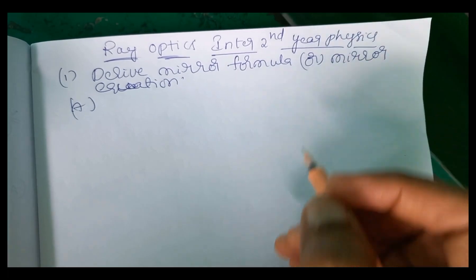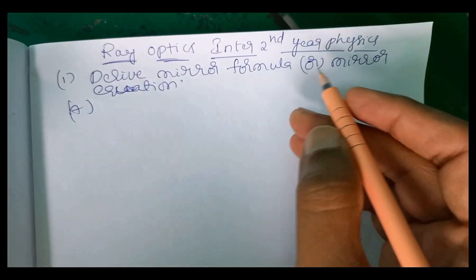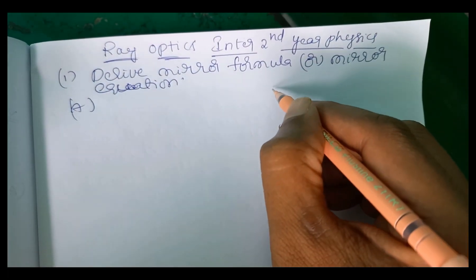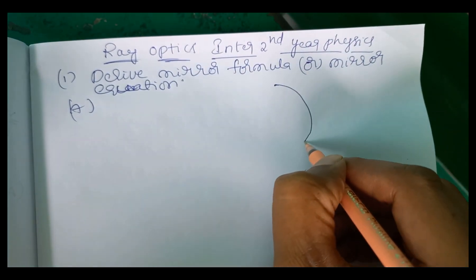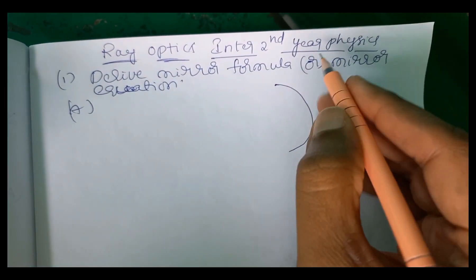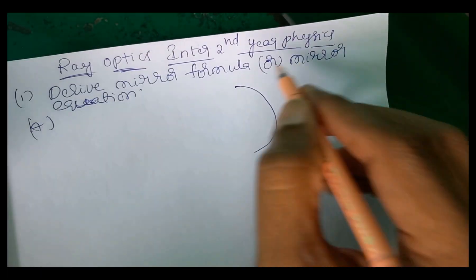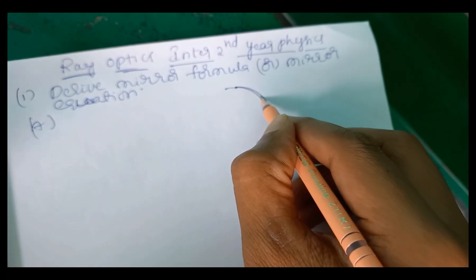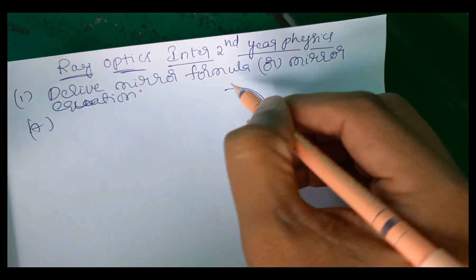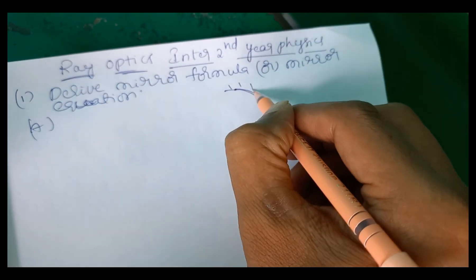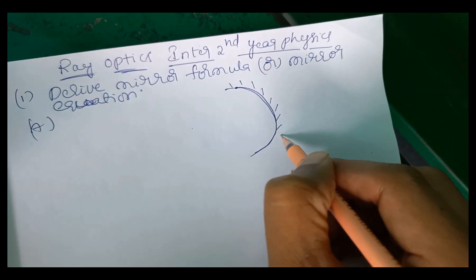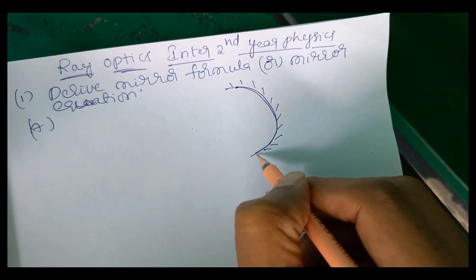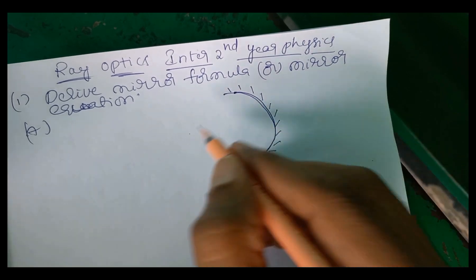So for this, we are taking a concave mirror and drawing a ray diagram. So it is a symbolic representation of concave mirror.